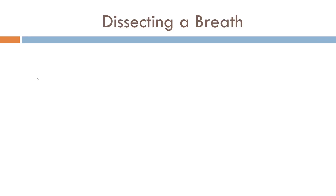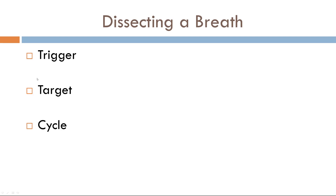Now, dissecting a breath. When I was taught mechanical ventilation, it was: here's everything you need to know about volume control, here's everything about pressure control — but too much of that became too overwhelming. So the way I like to approach it is dissecting a mechanical breath. There are four stages to a mechanical breath: the trigger phase, the target phase, the cycle phase, and the baseline phase. We'll get much deeper into each of these individual stages, but let's define these terms first.